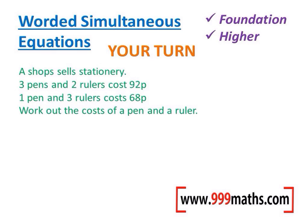Have a go at this question, which is taken from one of the sample exam papers from the new GCSE. Pause before we go through the answer. We start by writing our algebra: 3p + 2r = 92 and 1p + 3r = 68.